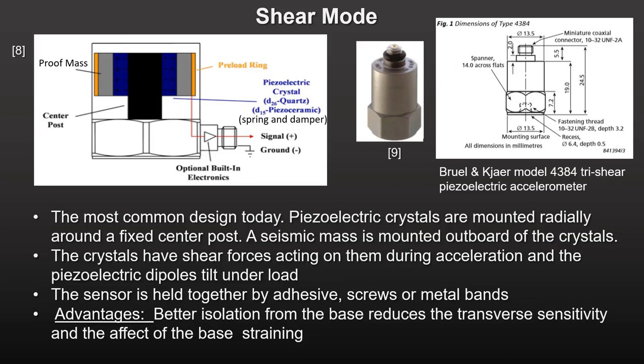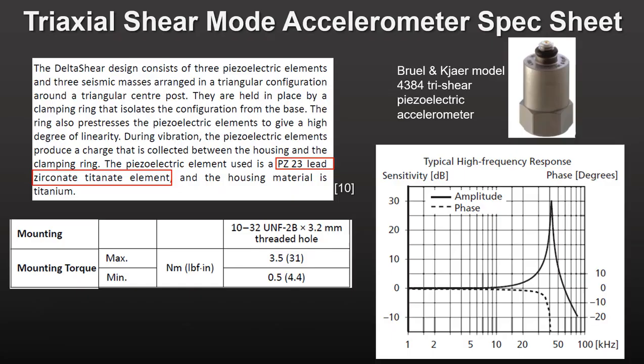In shear mode, the piezoelectric crystals are mounted radially around a fixed center post, with a seismic mass mounted outboard of the crystals. The crystals have shear forces acting on them during acceleration, and the sensor is held together by adhesive, screws, or metal bands. In a tri-shear sensor, three elements are positioned at 120-degree angles around the center post. The shear mode design isolates the crystal from base strain inputs while still providing the same degree of sensitivity as the compression mode design. As such, most piezoelectric accelerometers sold today use shear mode.